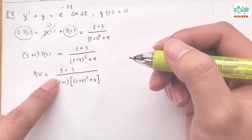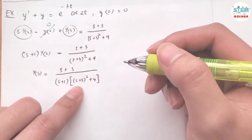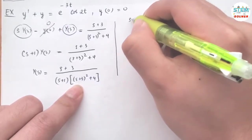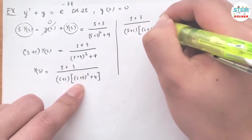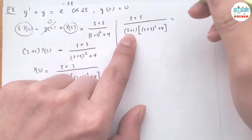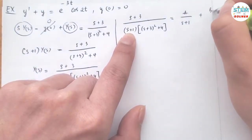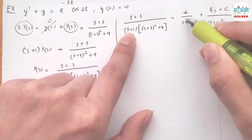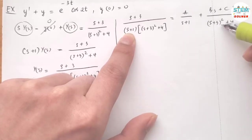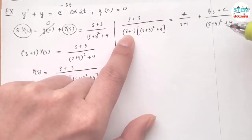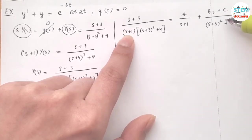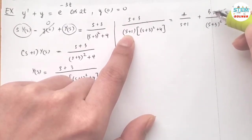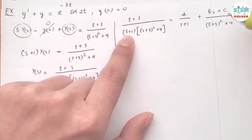We cannot find the inverse Laplace transform of this directly, so we use partial fraction decomposition. We write s plus 3 over s plus 1 times s plus 3 squared plus 4 equals A over s plus 1 plus Bs plus C over s plus 3 squared plus 4. The irreducible quadratic in the denominator requires Bs plus C on top, accounting for every power of s lower than the quadratic.